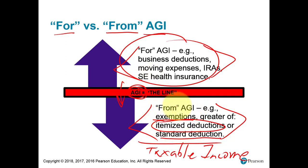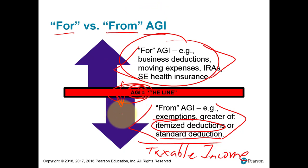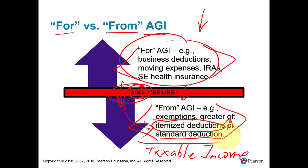Of the two types, the for-AGI deductions are better because you get to reduce the AGI number. The from-AGI deductions reduce taxable income, but reducing AGI is important because it may affect the amount of income further up on the tax return that you have to report, or it may affect some of the itemized deductions — specifically some we'll discuss today. It's always best to have the AGI number smaller, resulting in less income being reported and possibly increasing the amount of itemized deductions we can claim.